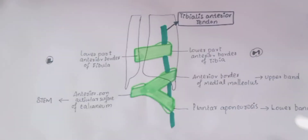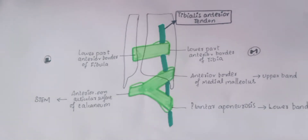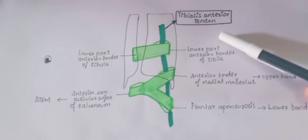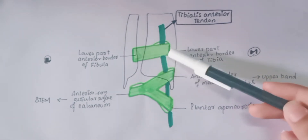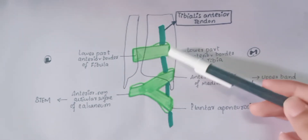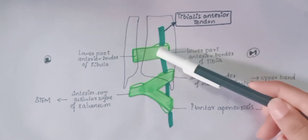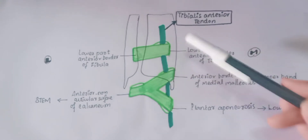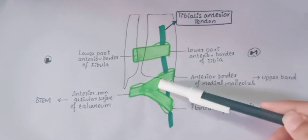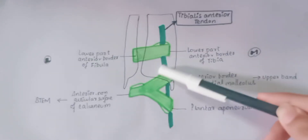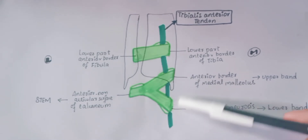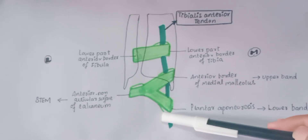Contents from medial to the lateral side include the tibialis anterior tendon. The superior extensor retinacula encloses the tibialis anterior tendon. It is also enclosed by the upper band of the inferior retinacula, but it is not enclosed by the lower band.